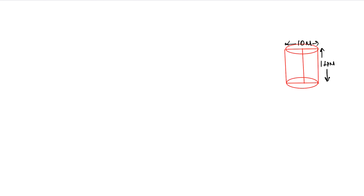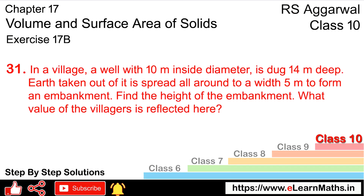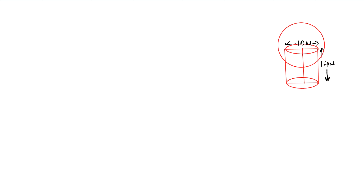Now, on all four sides of the well, an embankment is made. An embankment means a mound of earth placed around the well so that the water does not flow out. We need to find the height of this embankment — how high has this mound been raised?